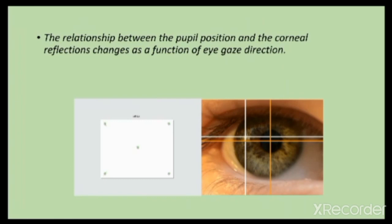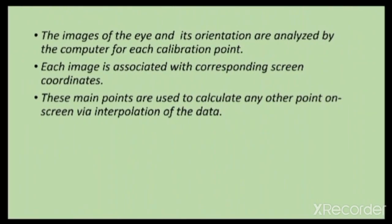The relationship between the pupil position and the corneal reflection changes as a function of eye gaze direction. The images of the eye and its orientation are analyzed by the computer for each calibration point. Each image is associated with corresponding screen coordinates, and these data points are used to calculate any other point on screen via interpolation.